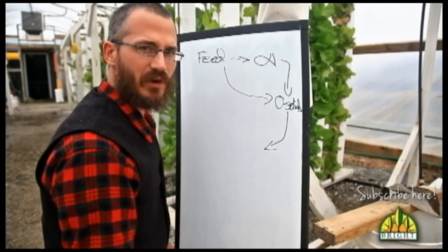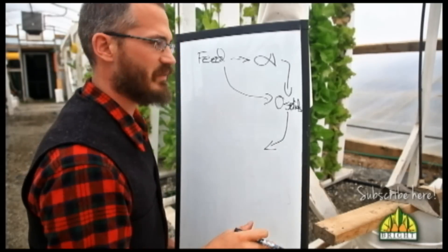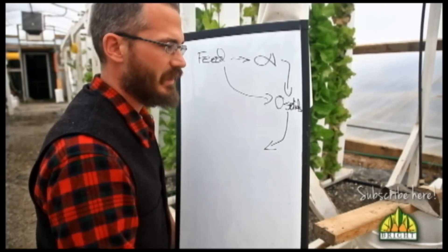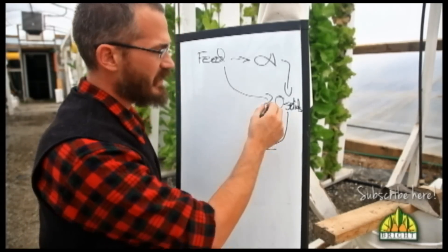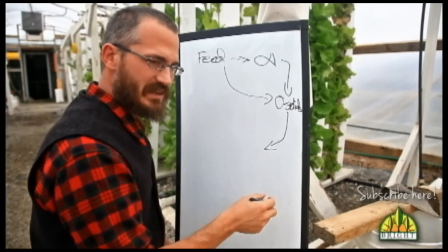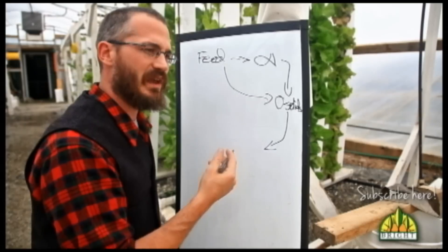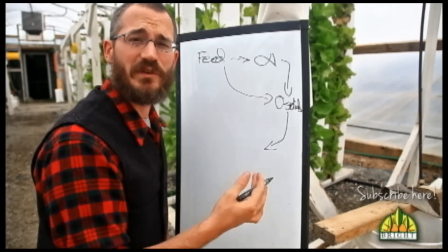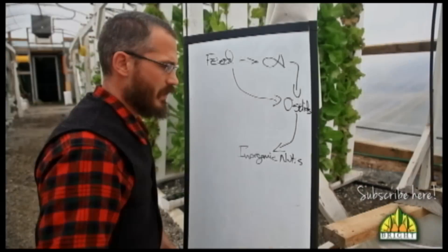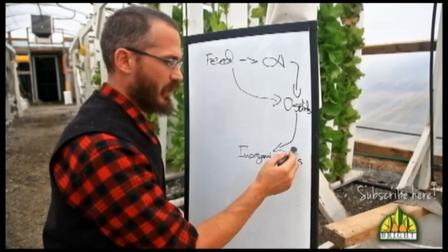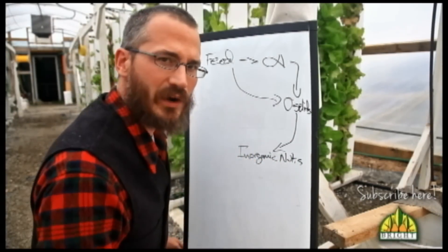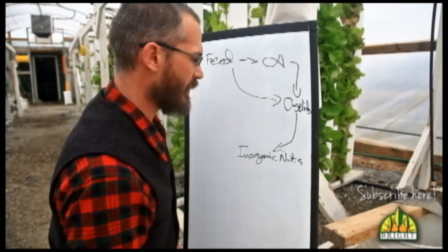Now sometimes this is through the microbes, sometimes it's through other organisms in our system, sometimes it's just chemical. But the reality is as these are oxidized and mineralized by our microbes, they end up becoming the inorganic nutrients that are able to feed our plants. So these inorganic nutrients then are what float around in our system water and are actually taken up by the plant most of the time.